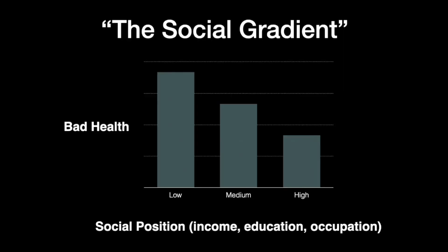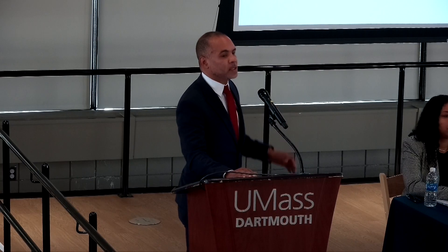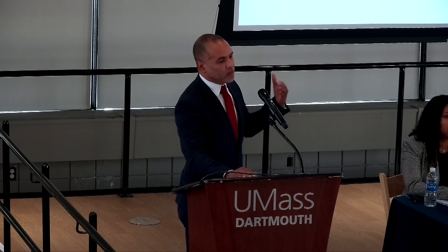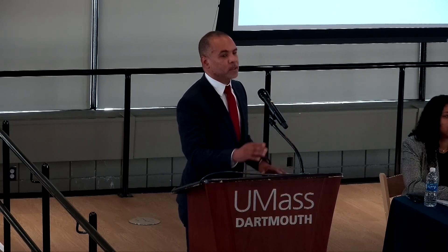One of the key insights from the field of social epidemiology is the notion of the gradient: no matter which particular health outcome you choose — arthritis, cardiovascular disease, infant mortality, schizophrenia, anxiety — it always follows this pattern. If on one axis you have the health outcome and on the other axis a measure of social status — usually income, education, or occupation — it always has this stepladder fashion. The bottom does worse than the middle; the middle does worse than the top.